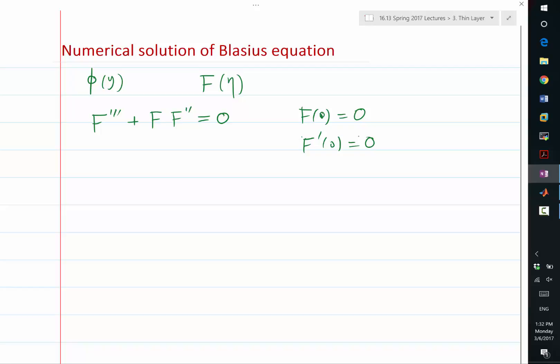So f prime, in this case, is the y-directional derivative of the stream function, which corresponds to which velocity? x-velocity, right? So y-derivative of stream function is x-velocity.